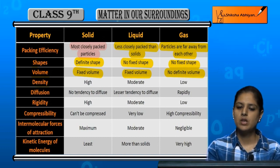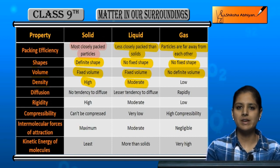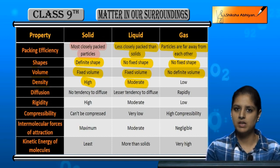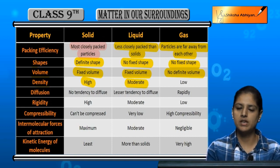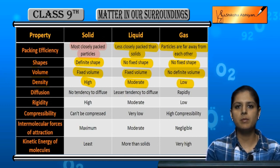Density: solids are the most dense. Liquids are intermediate in density — between solid and gas. And gases are the least dense.